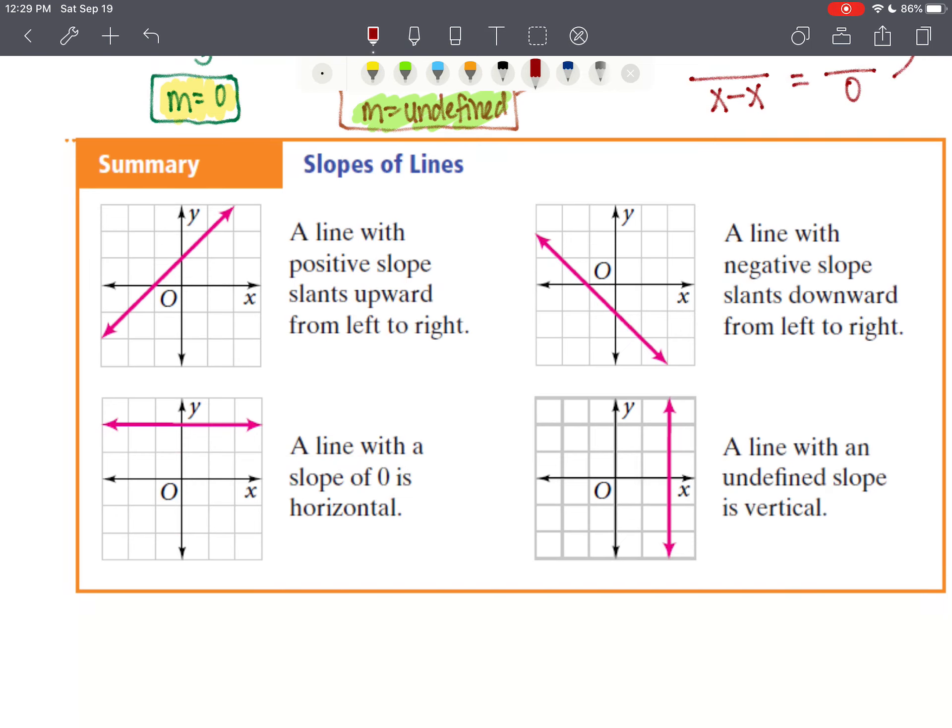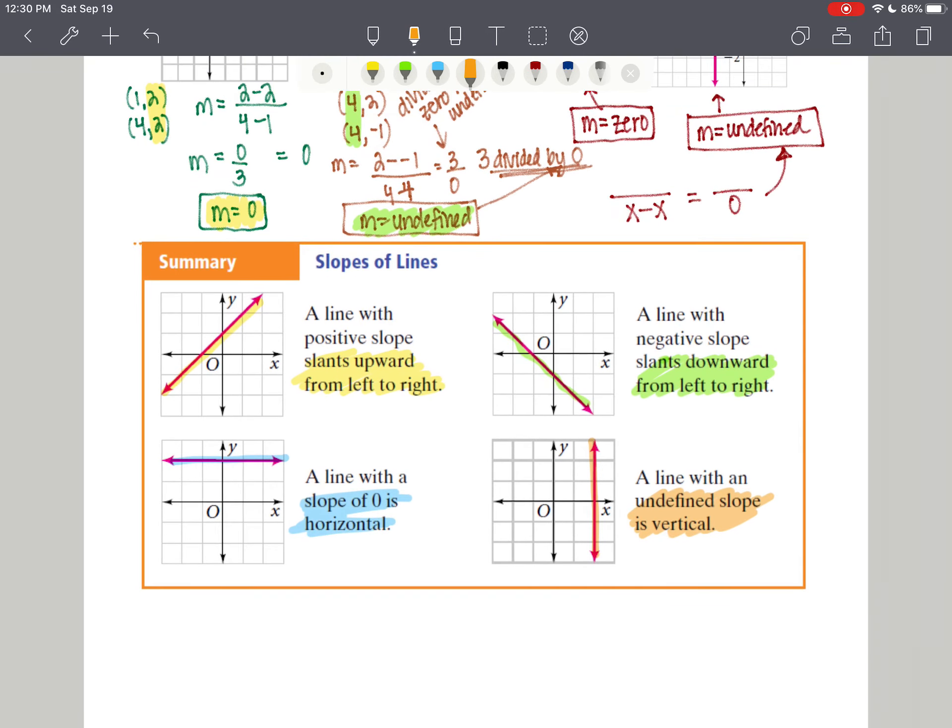So here's a little summary for us. A line with positive slope slants upward from left to right. A line that slants downward from left to right has a negative slope. All horizontal lines have a slope of 0. And all vertical lines have a slope that is undefined. Those four things are crucial for you to know moving forward. But between these two videos, you should have plenty to go on for your first assignment that is dealing with slope.